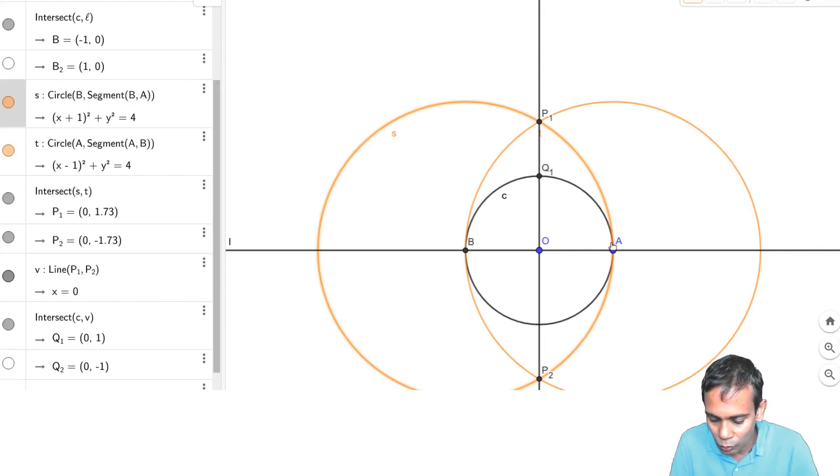Now because OA and OQ1 are both radii of a circle, OA and OQ1 have the same length. So OQ1 is also one unit and by our construction this angle OAQ1 is a right angle. And so triangle OQ1A is a right angle triangle with right angle at the vertex A. And so if you take the segment Q1A, that segment has length square root 2. So this is a construction of square root 2.